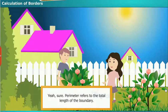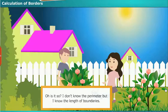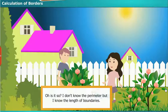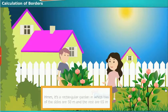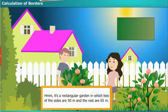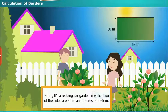Yes, sure. Perimeter refers to the total length of the boundary. Oh, is it so? I don't know the perimeter, but I know the length of boundaries. That's okay. You tell me the boundaries, I will calculate the perimeter. Hmm, it's a rectangular garden in which two of the sides are 50 meter and the rest are 65 meter.